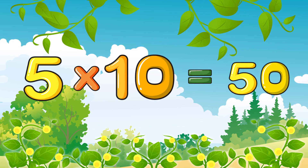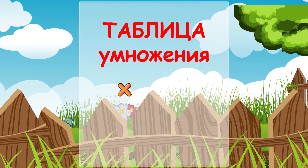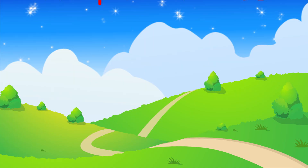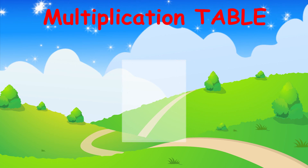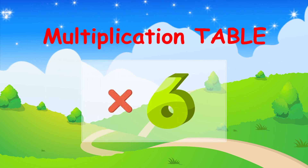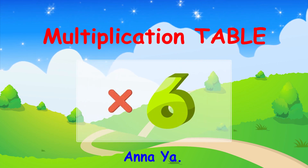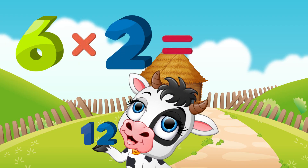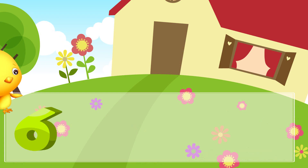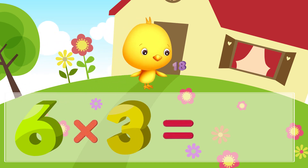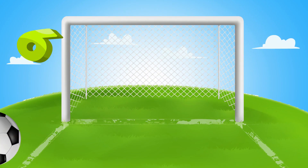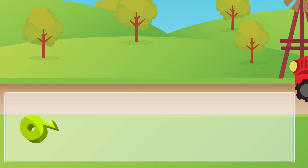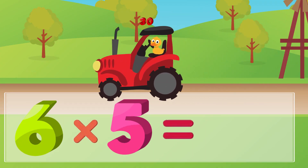Six times table. Six times two is twelve, six times three is eighteen, six times four is twenty-four, six times five is thirty.